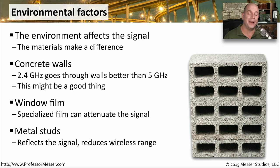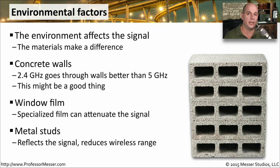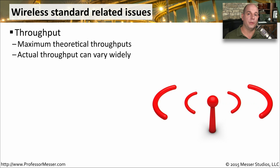Another important environmental concern might be inside of your walls — there might be metal studs, and our wireless signals bounce and reflect off of those metal studs, which will reduce the range that our wireless signals are able to go. Many of the throughput values you might see associated with a wireless network are theoretical maximums. In your environment, you might have a lot of different variables that cause the throughput to be lower than what's listed as a theoretical maximum.